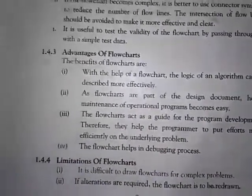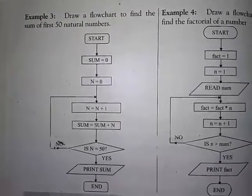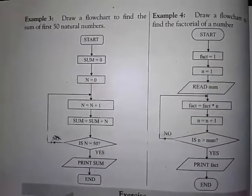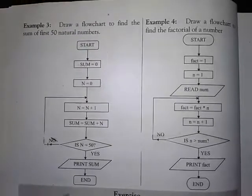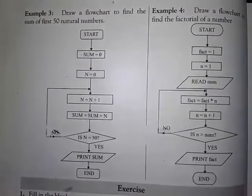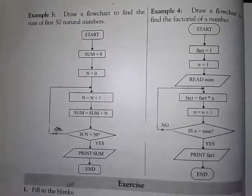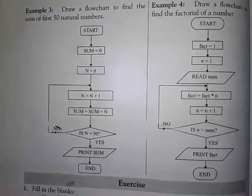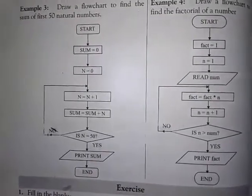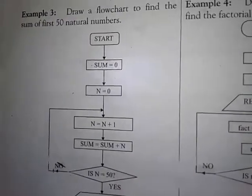اب ہم flowcharts کی examples دیکھیں گے۔ پہلی example: draw a flowchart to find the sum of first 50 natural numbers۔ آپ نے پہلے 50 natural numbers لینے ہیں اور انہیں آپس میں plus کرواتے جانا ہے — zero سے شروع کر کے 1، پھر 2، پھر 3 اسی طرح جب تک value 50 تک نہ پہنچے۔